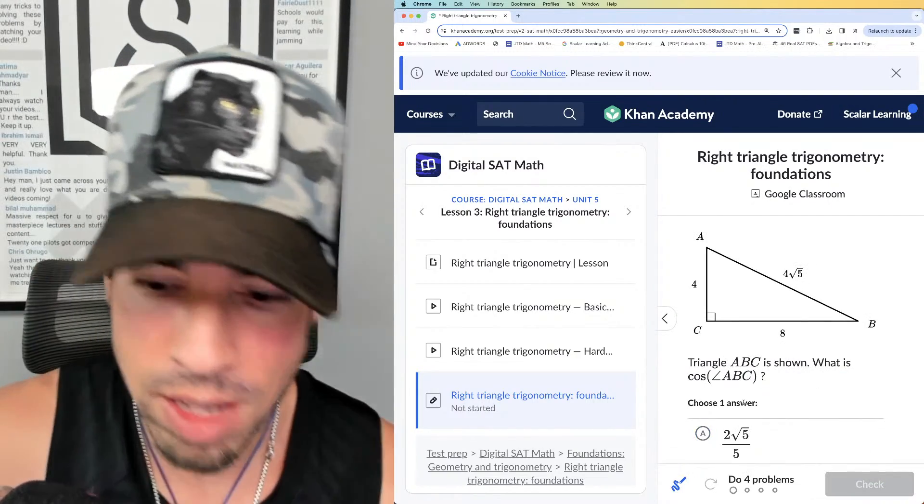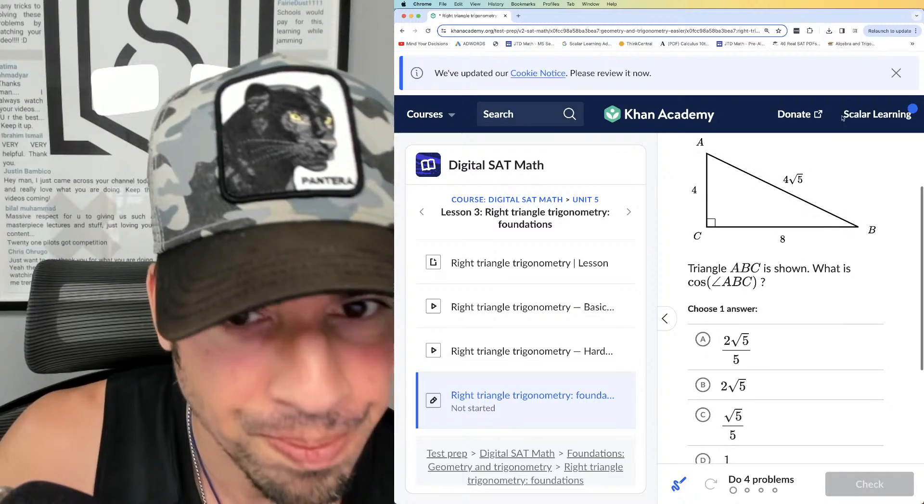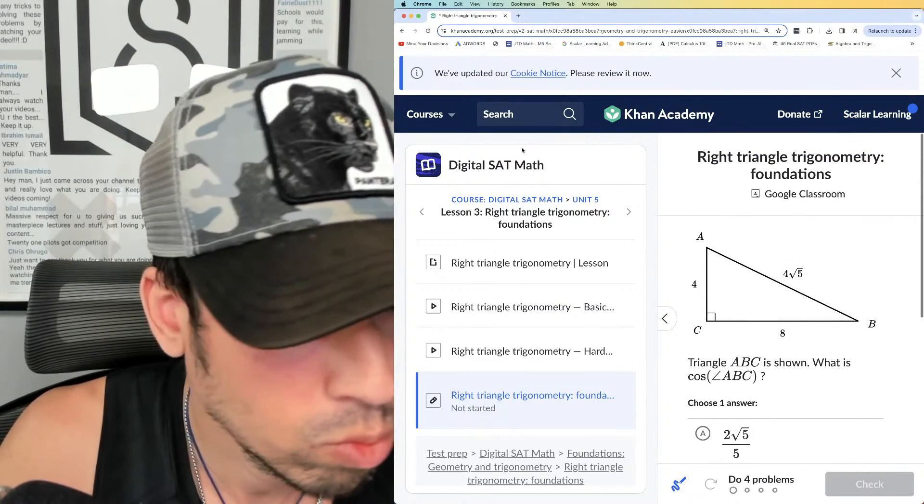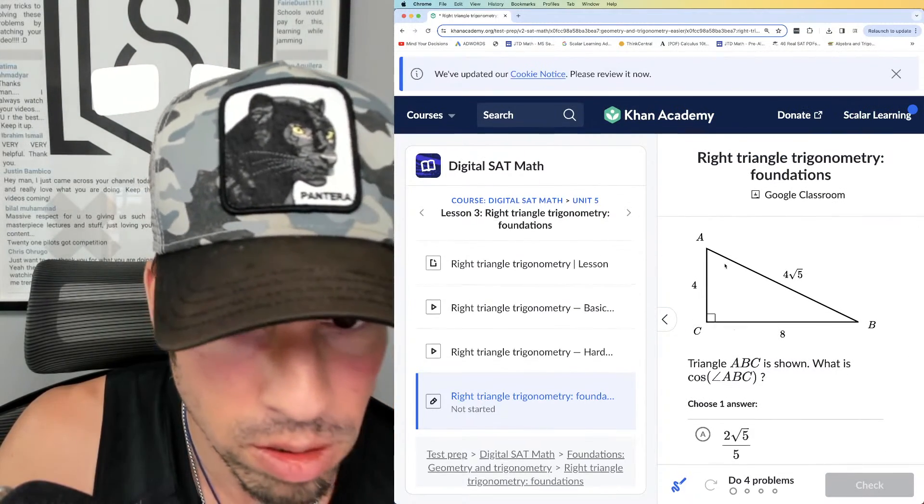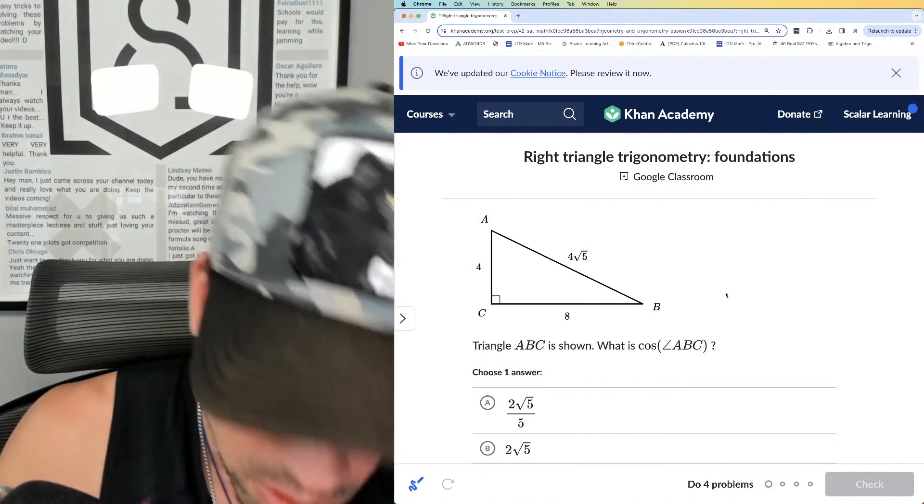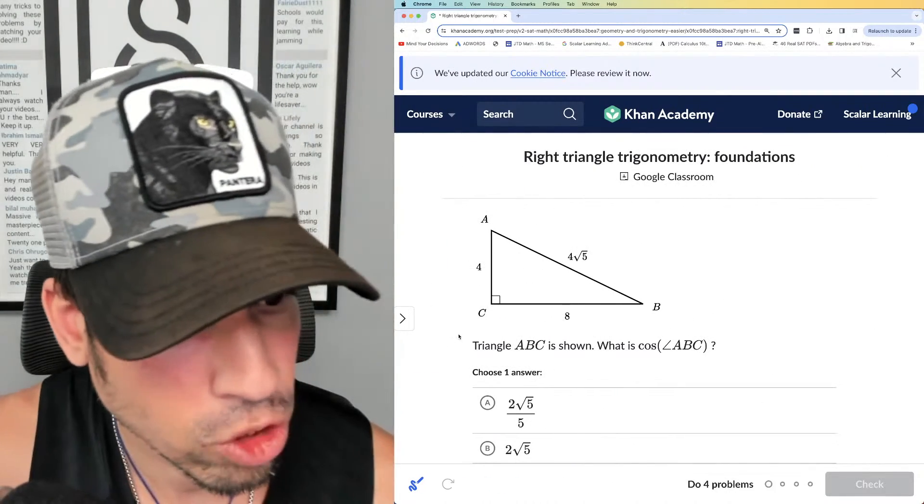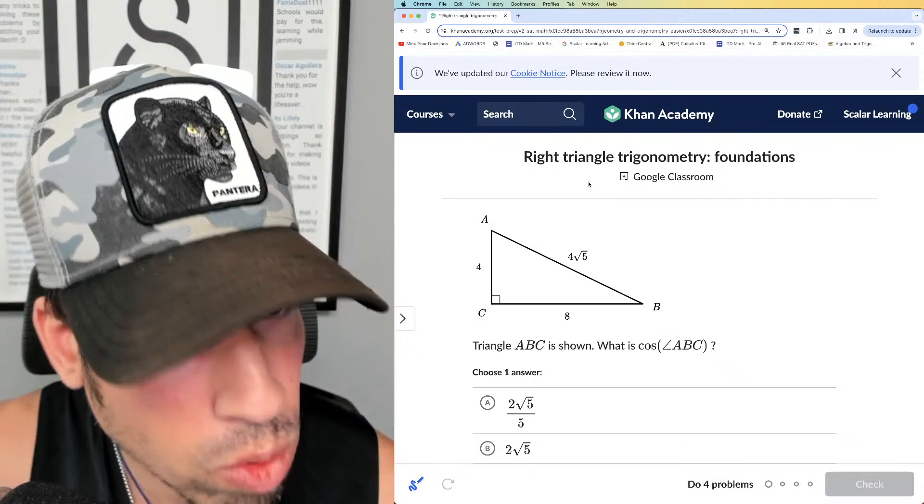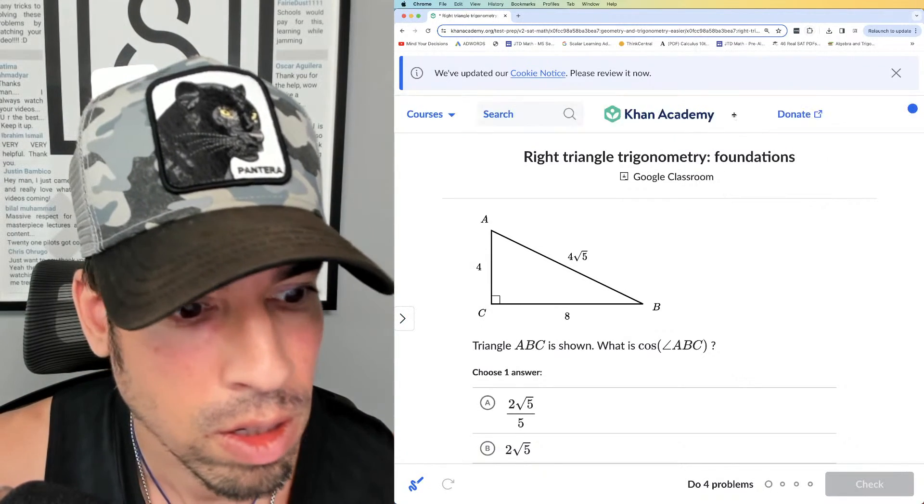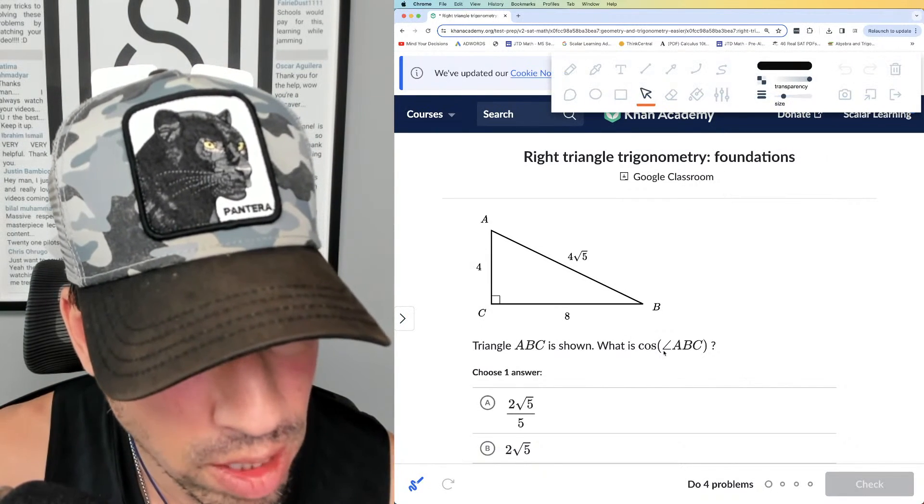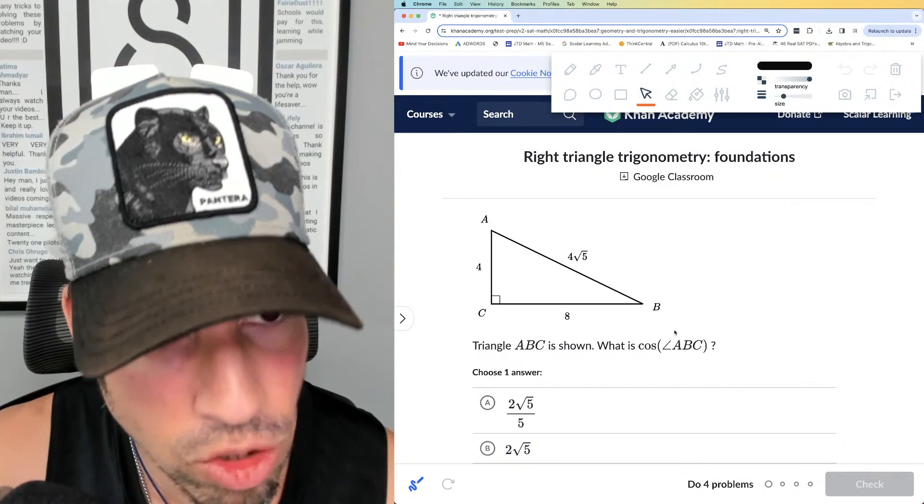All right, here we go, question number one. Let's expand this a little bit. So we got triangle ABC is shown—what is cosine of angle ABC? They say cosine of angle ABC, that center letter, that's the angle, so we're talking about really angle B.